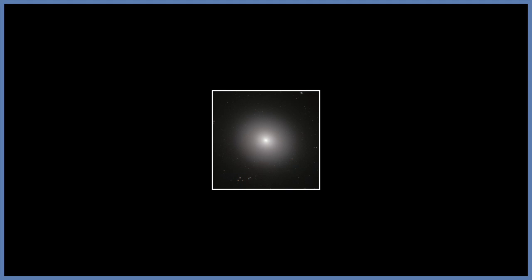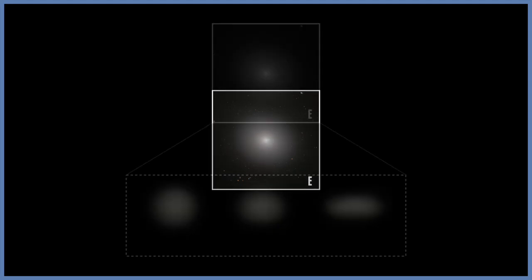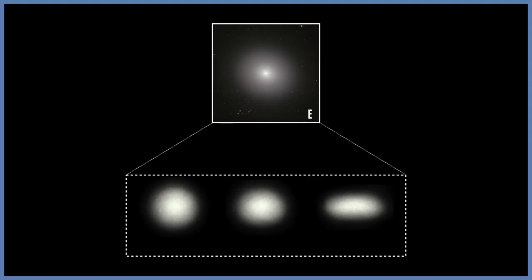Elliptical galaxies are marked with the letter E, and these galaxies can be subdivided depending on how round they appear. A number is added to the E from 0 to 7. A completely round elliptical galaxy is known as E0, and a more flattened galaxy that still has round features is known as an E7 galaxy. So these are the two extremes of elliptical galaxies.